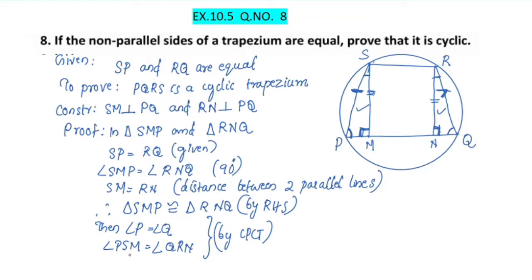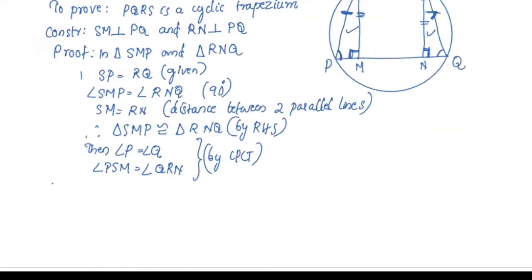SMP is equal to RNQ. I will add 90 degrees. Now, angle PSM is equal to angle QRN. This is the proof by CPCT.